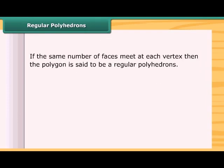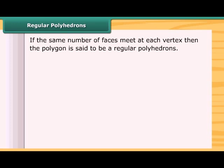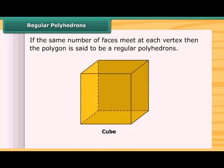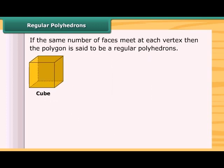If the same number of faces meet at each vertex, then the polygon is said to be a regular polyhedron. A cube is a regular polygon because here, three faces meet at each vertex.